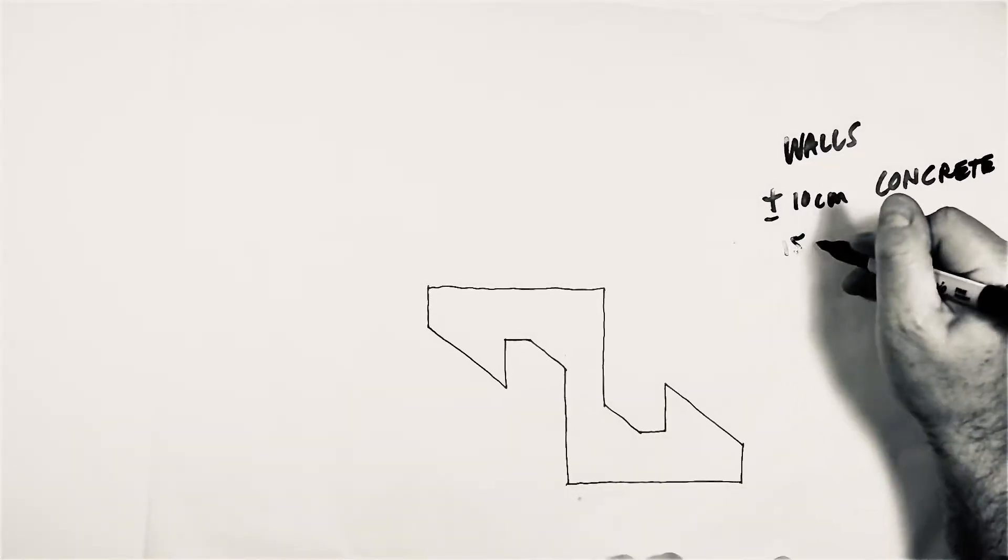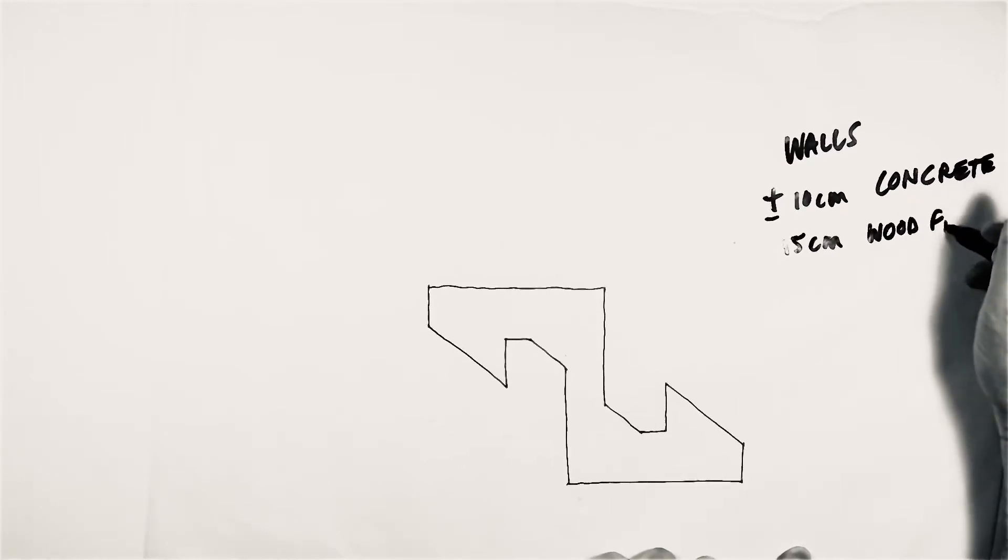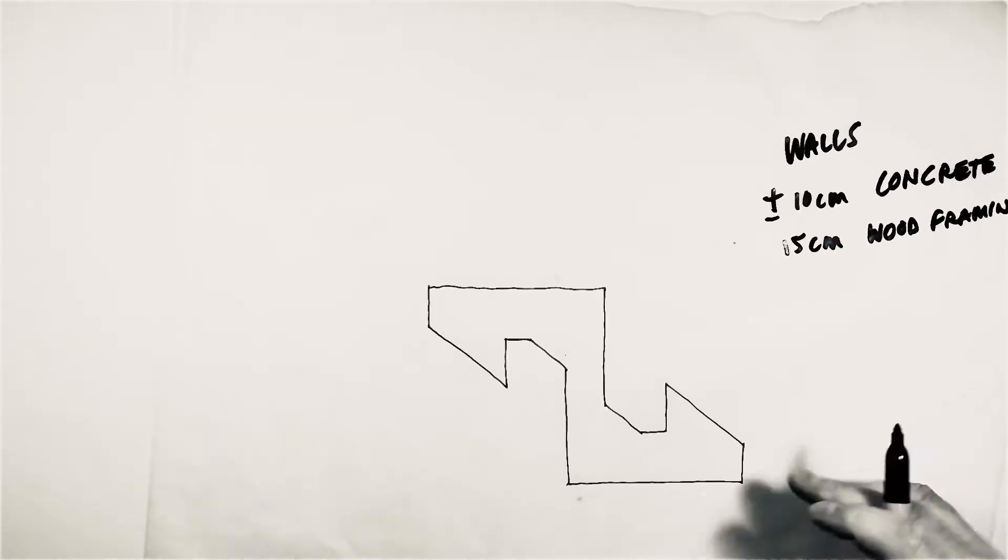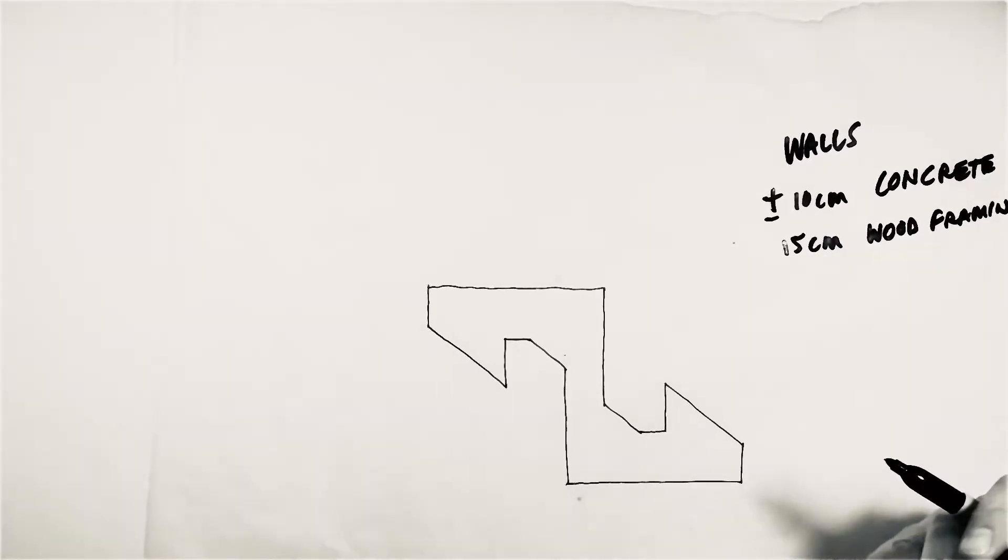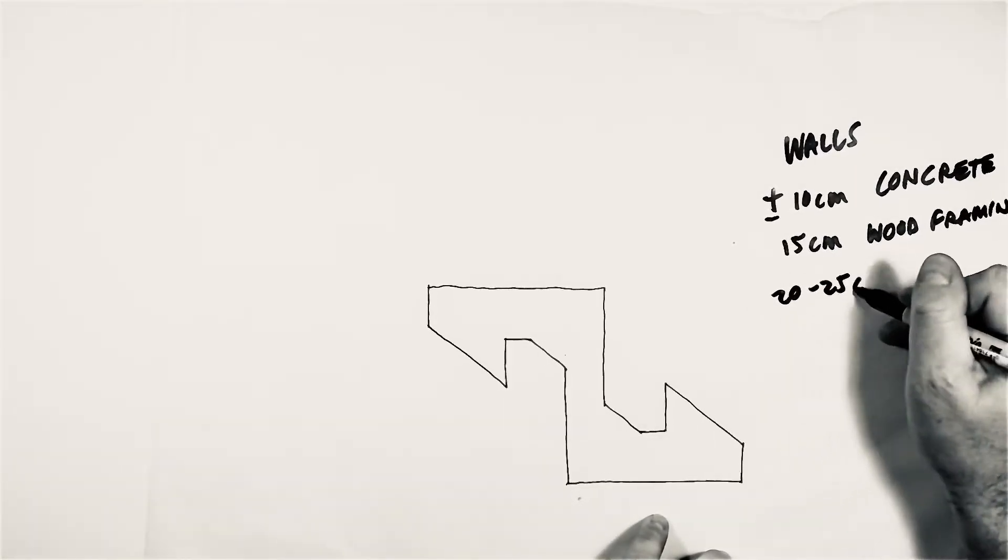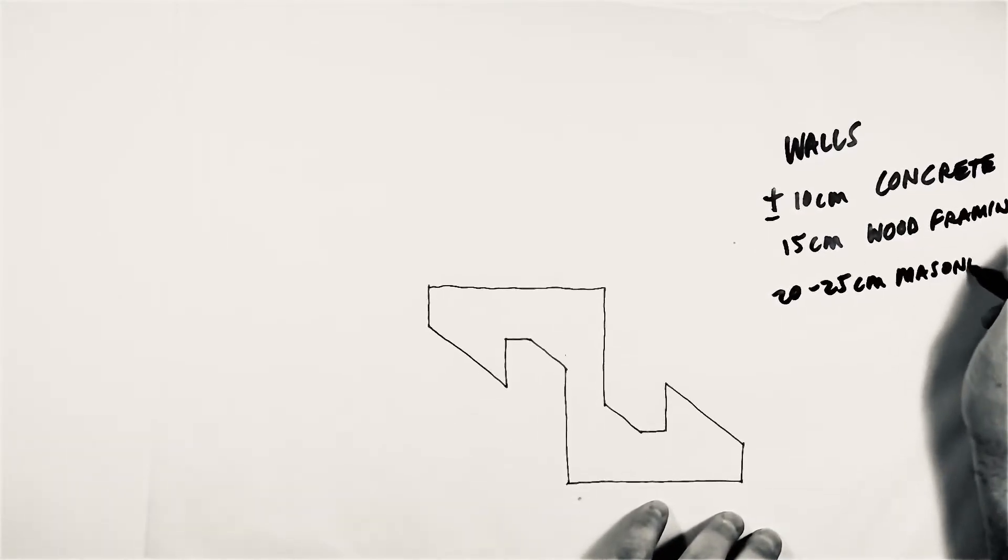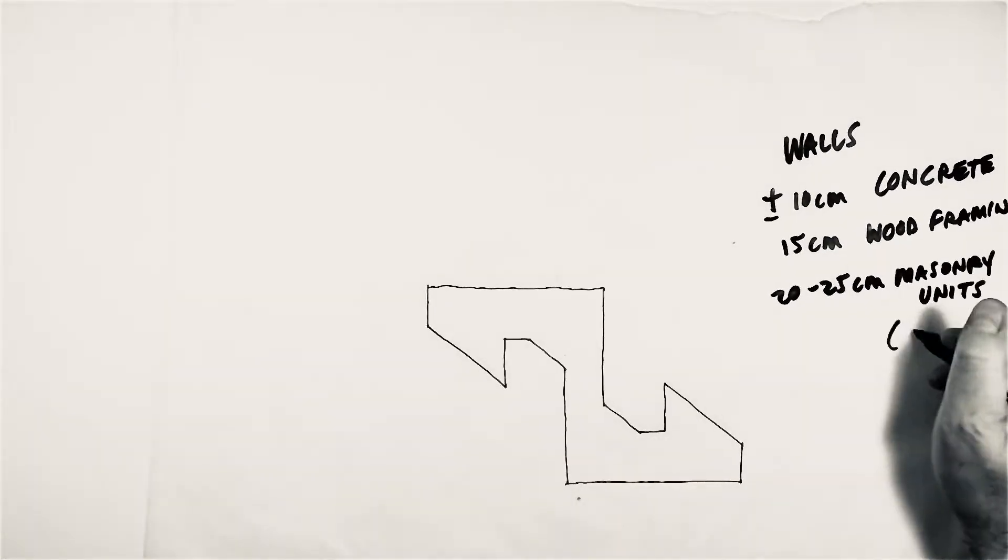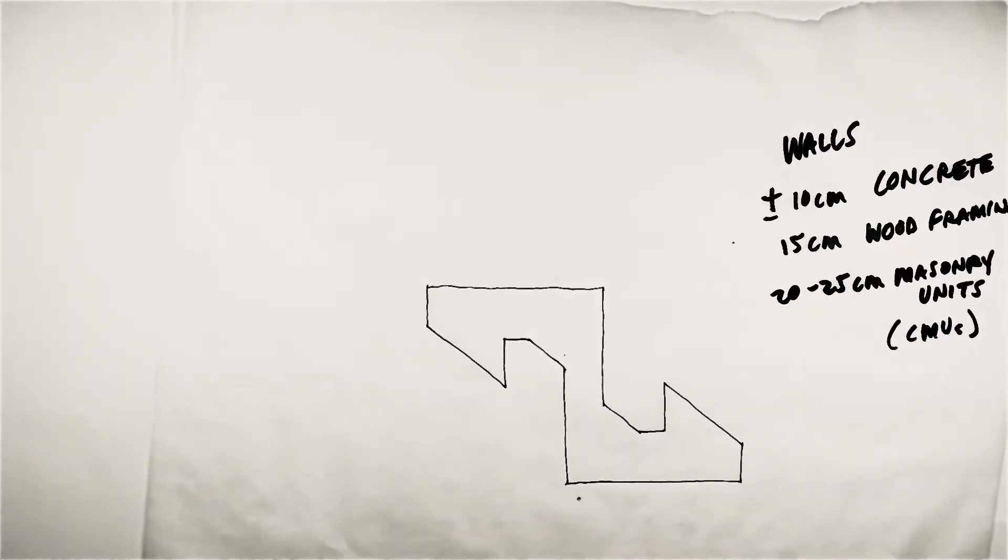15 centimeters roughly for wood framing. That's when you have a wood frame inside of the wall and then it's sheathed on either side, interior and exterior with other sheet material, which makes it thicker. 20 to 25 centimeters roughly for masonry units. Those are concrete blocks, otherwise known as CMUs, concrete masonry units.